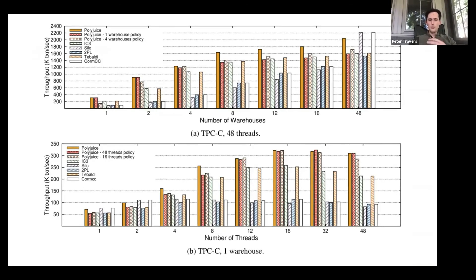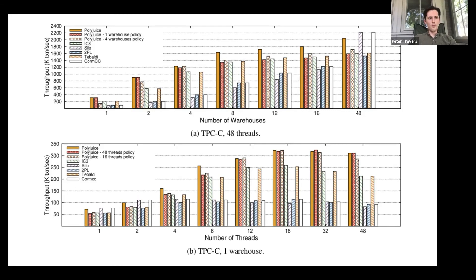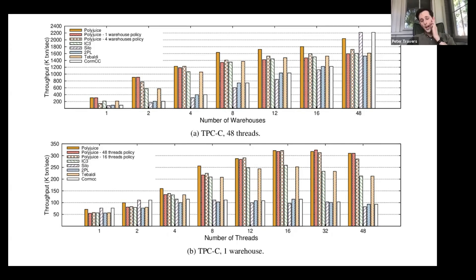Here are the top-line results, comparing against other databases with varying numbers of active threads and warehouses. Polyjuice was able to outperform some databases, but not necessarily under all conditions. Silo and ComCC with very large numbers of warehouses will outperform Polyjuice. However, looking at the single-warehouse graph and purely increasing the number of threads, Polyjuice performs very well and significantly outperforms other databases.